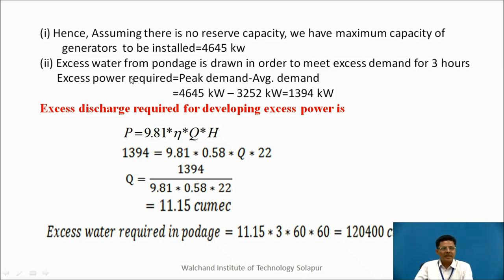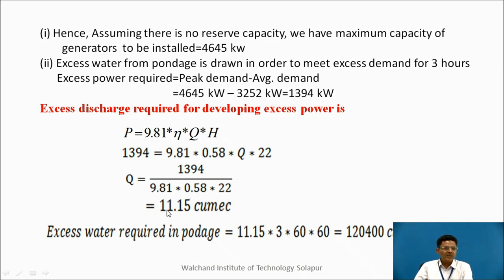Excess water from pondage is drawn to meet excess demand during the 3 peak hours. The difference between peak demand and average demand is 4645 − 3251 = 1394 kilowatts. We need to generate an additional 1394 kW for 3 hours. Using P = 9.81 × η × Q × H, the additional discharge required is 11.15 cubic meters per second. This discharge is needed for 3 hours; multiplying by the number of seconds in 3 hours gives a pondage volume of 120,420 cubic meters. This is how we calculate the reservoir storage capacity required for a runoff river plant.